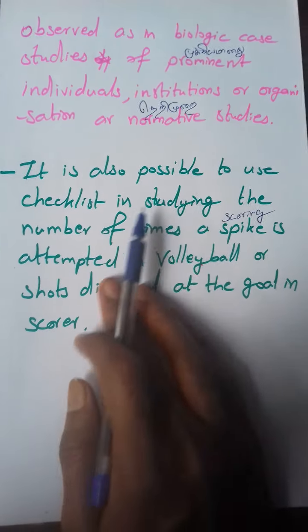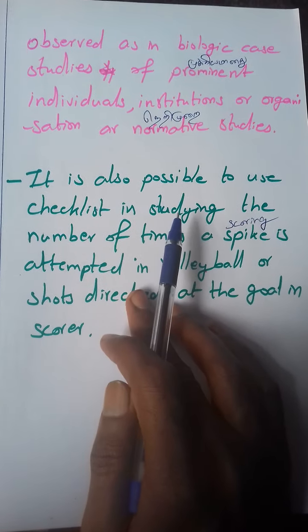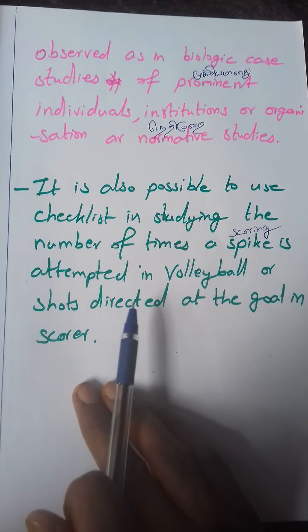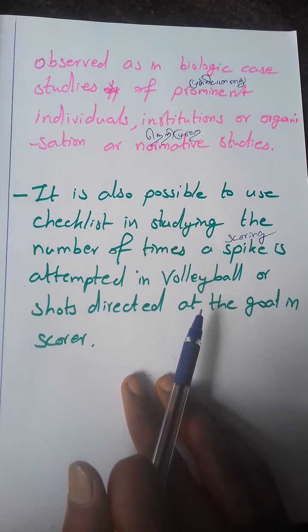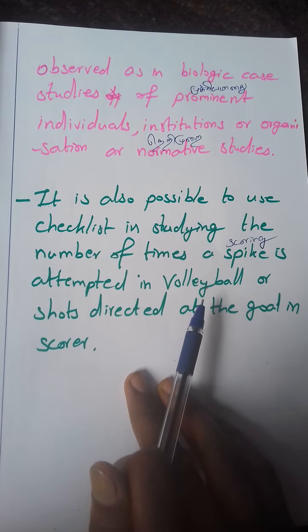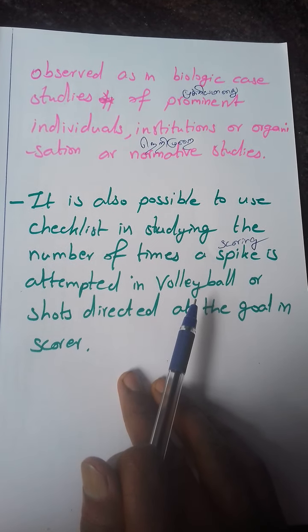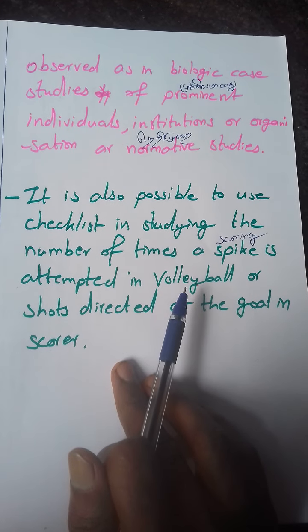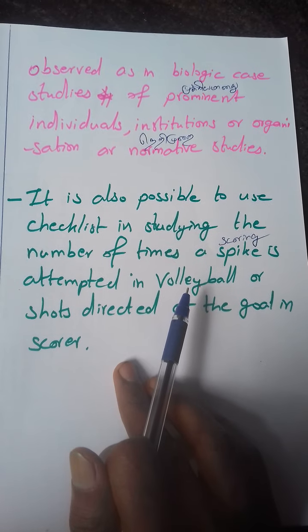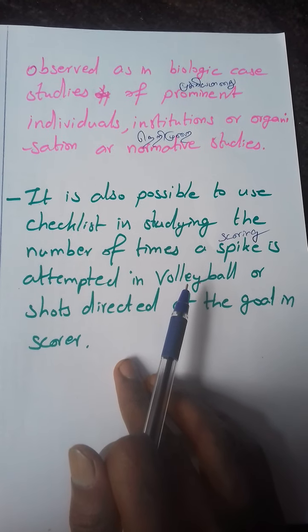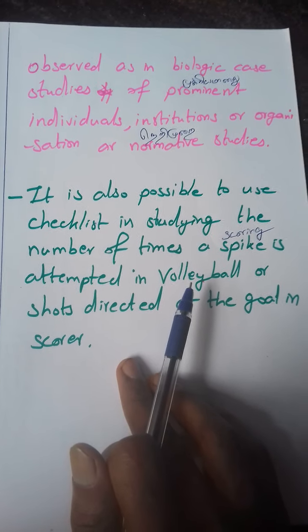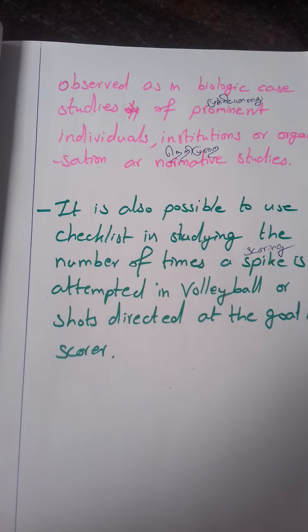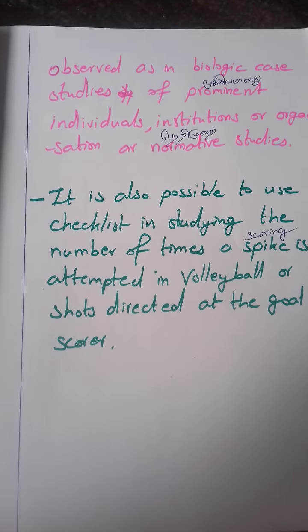It is also possible to use a checklist in studying the number of times a spike is attempted in volleyball, or shots directed at the goal. For example, when you take a shot and record a score, you can score your points on a checklist to make a list of scoring points.